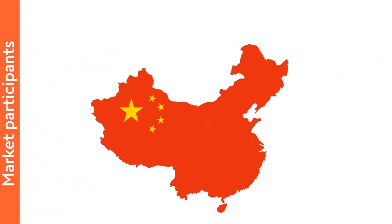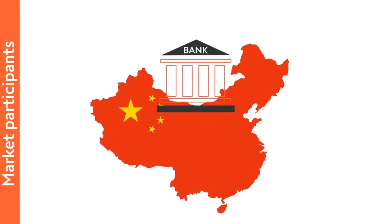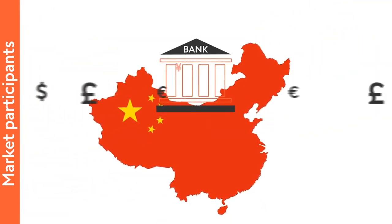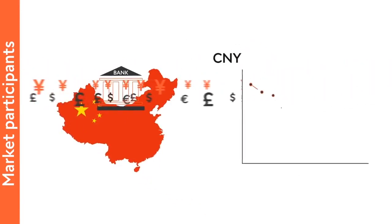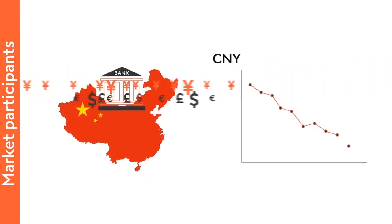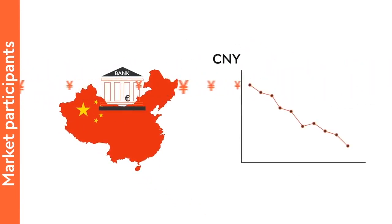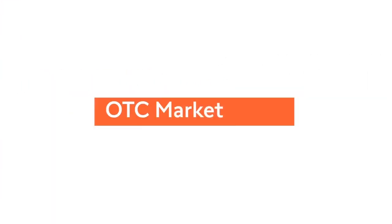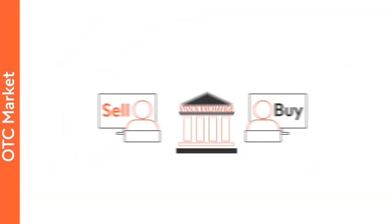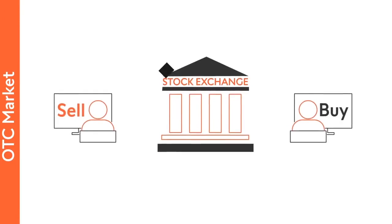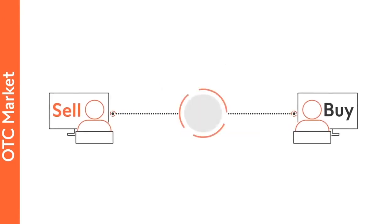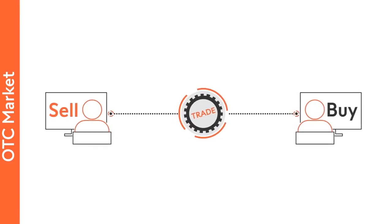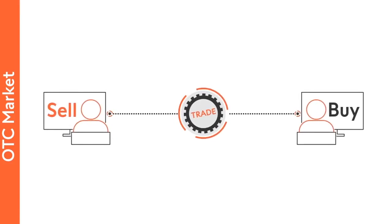For example, if a national bank wants to weaken its currency so the country remains competitive for exporting goods and services, it may buy foreign currencies against its own currency. Foreign exchange transactions are not performed on any central exchange but are conducted mainly bilaterally between market participants over-the-counter (OTC).